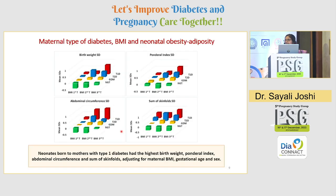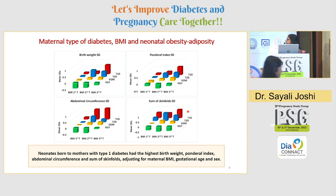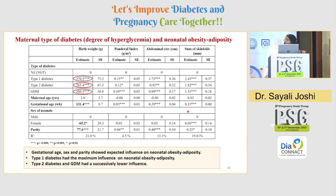Next, we examined the interaction of maternal size and glycemia with respect to neonatal obesity and adiposity. We found once again that offspring born to mothers with type 1 diabetes had the highest birth weight, ponderal index, abdominal circumferences, and sum of skinfolds after adjusting for maternal age, gestational age, and gender of the baby. We then performed multiple linear regression to examine the determinants of offspring obesity and adiposity.